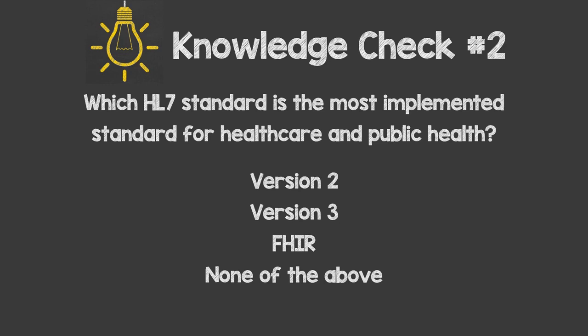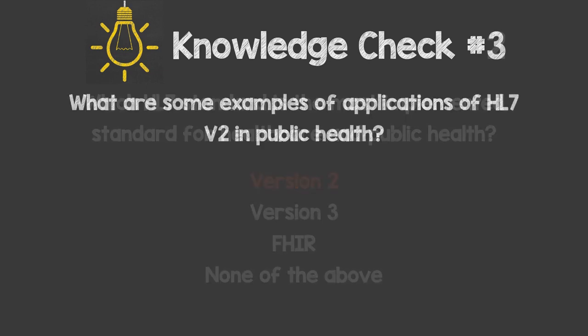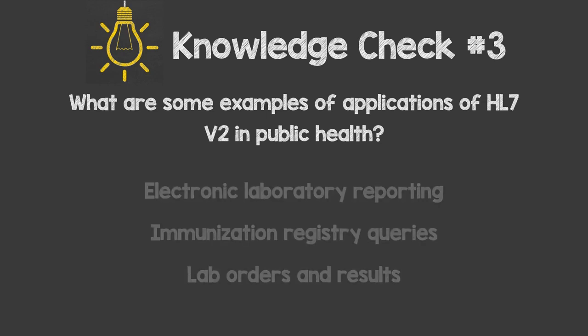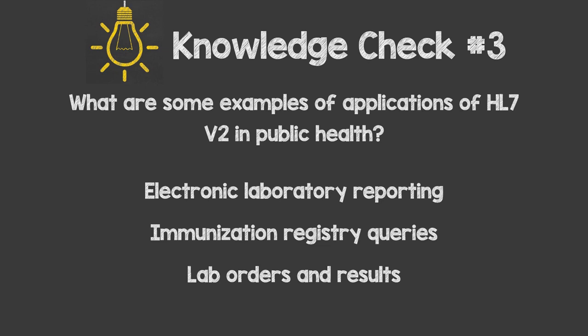The correct answer is version 2. HL7 version 2 is used across healthcare and public health for exchanging data. What are some examples of applications of HL7 V2 in public health? This is not an exhaustive list, but some examples include electronic laboratory reporting, queries to and responses from immunization registries, and laboratory orders and results.